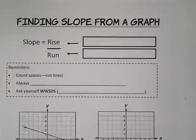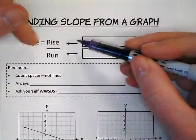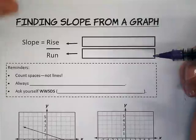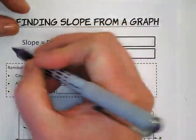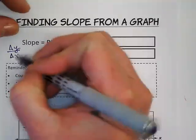So today we're going to be looking at how to find slope from a graph. Slope is rise over run, which we've spoken about in the past, is also known as the change in Y over the change in X.